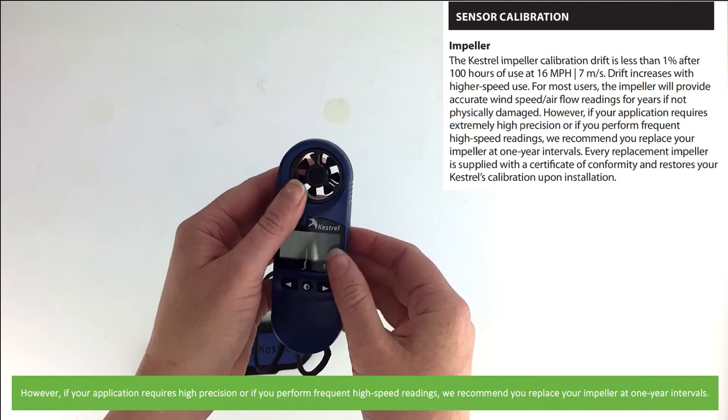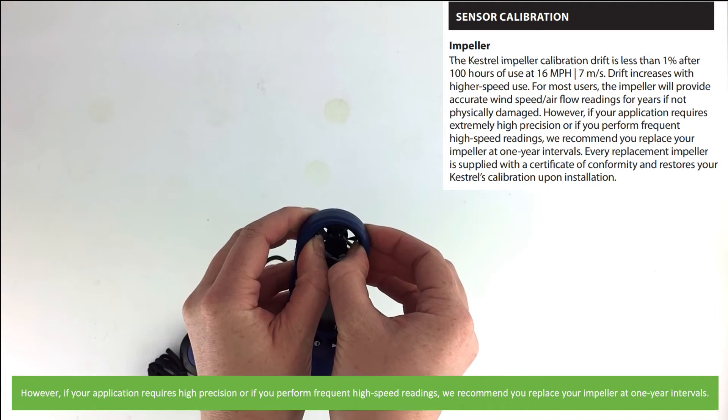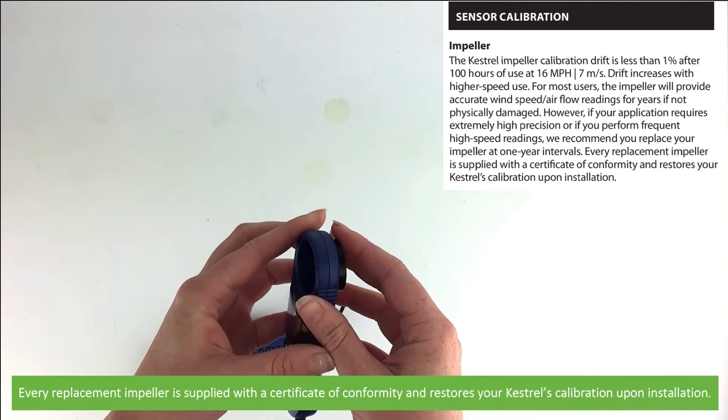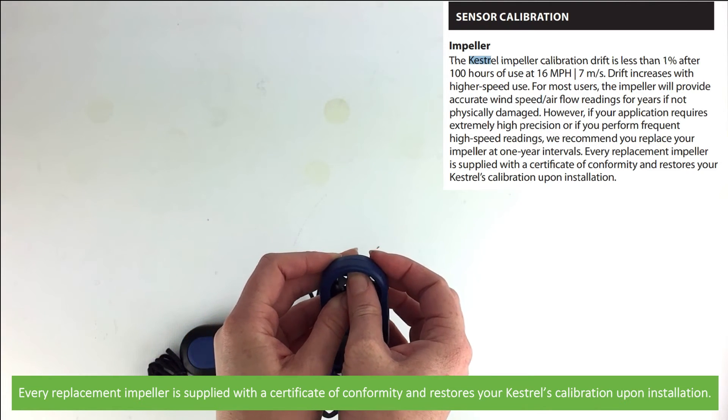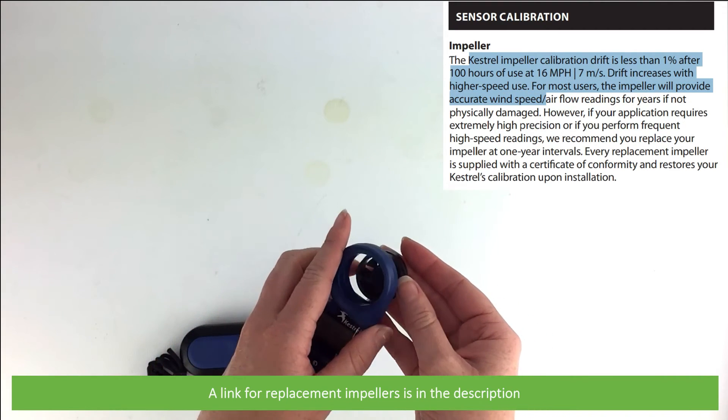However, if your application requires high precision or if you perform frequent high-speed readings, we recommend that you replace your impeller at one-year intervals. Every replacement impeller is supplied with a certificate of conformity and restores your Kestrel calibration upon installation. A link and video for replacement impellers is in the description.